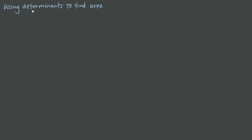That's based on the fact that if you have some matrix A — let's say A is a 2 by 2 matrix with entries 1, 2, 3, 0 — if we think about each of the columns of A as a column vector, we have the vector (1, 3) and the vector (2, 0). Let's sketch those in an x, y coordinate plane.